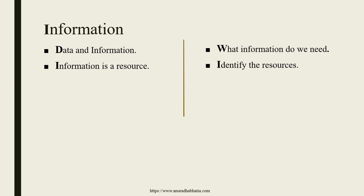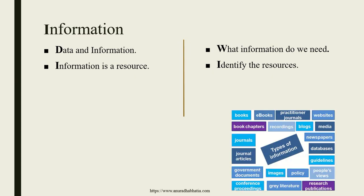Information will provide us with resources. These are the few resources and types of information: we can get our information from books, e-books, journals, websites, book chapters, recordings, blogs, media, newspapers, journal articles, government documents, images, policies, people's views on Twitter and LinkedIn, guidelines, research publications, grey literatures or white papers, conference proceedings, and so on. Wherever we can get information, that can help us build an information system or, in the end, a management information system.